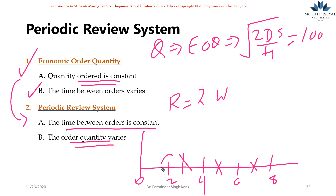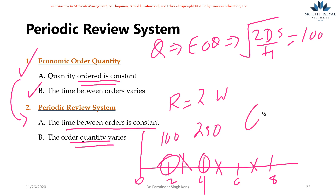On week two I may order 100 units. If demand is high, then on week four, when the expected demand for the following period is also high, I may order 250 units. So I can vary the order quantity; however, the review period is constant.